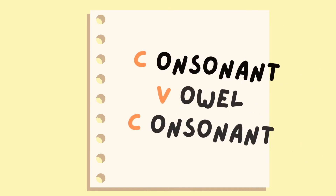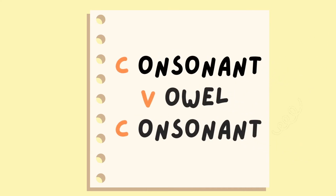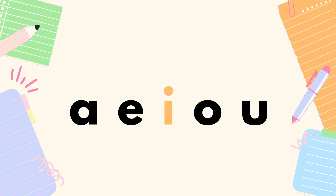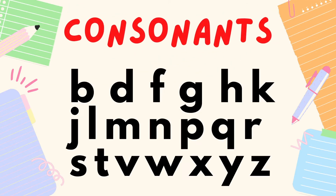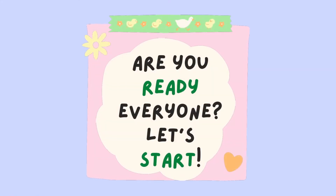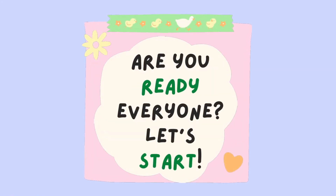If we say CVC, C is for consonant, V is for vowel, C is for consonant. These are the vowels. These are the consonants. Are you ready everyone? Let's start.